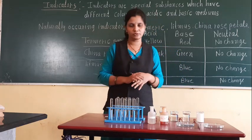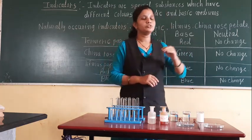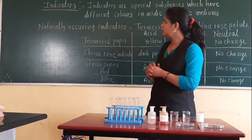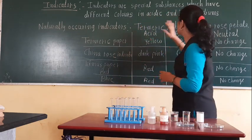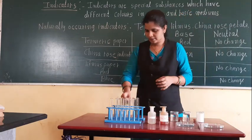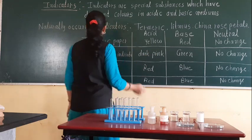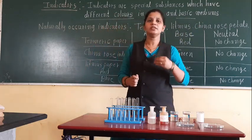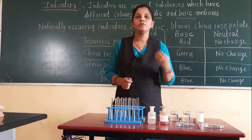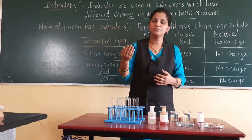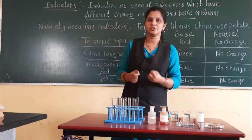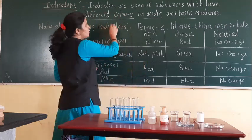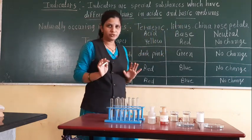Yesterday we also discussed about neutral substances. Indicators are special substances which have different colors in acidic and basic solutions. Suppose any substance is acidic or basic and we don't know — for that we use an indicator. Whenever we use an indicator to test whether a substance is acidic or basic, the indicator changes its color.